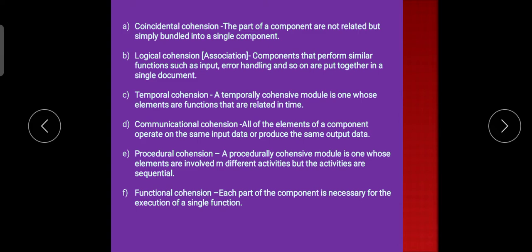Procedural cohesion: a procedurally cohesive module is one whose elements are involved in different activities but the activities are sequential. Functional cohesion: each part of the component is necessary for the execution of a single function.